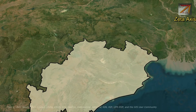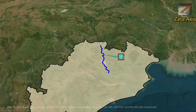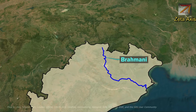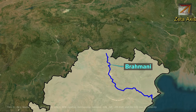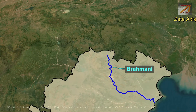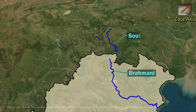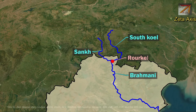The next important river is the Brahmani river. The Brahmani river is a major seasonal river of Odisha. It is formed by the confluence of rivers South Koyal and Sankh near Rourkela city.